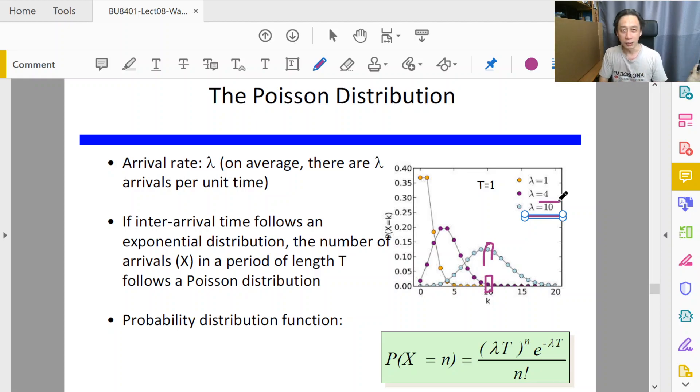Now, if you tell me that every hour on average four customers arrive, and then you say what's the chance that the next hour 10 customers will arrive, I would say the chance is very slim, and that is correctly reflected by the purple dots here.